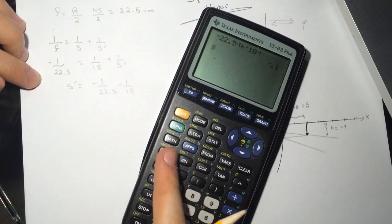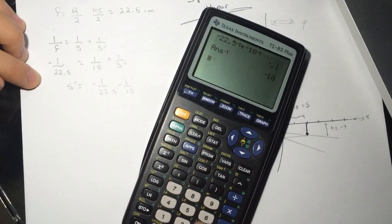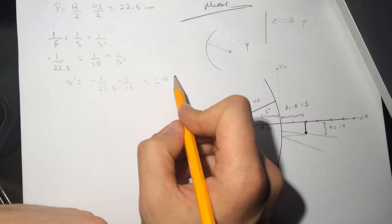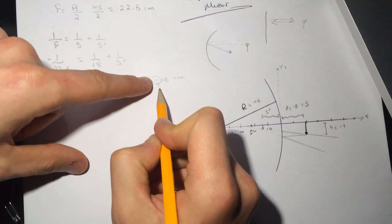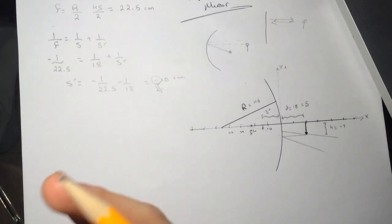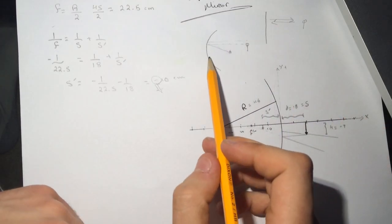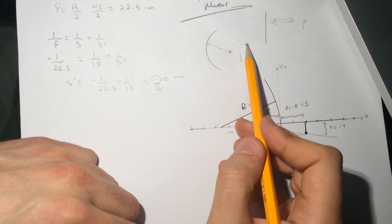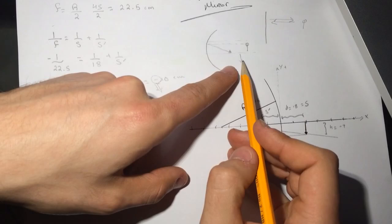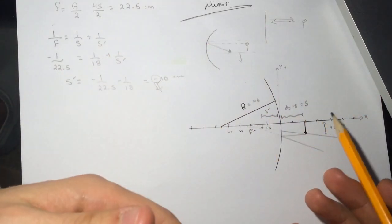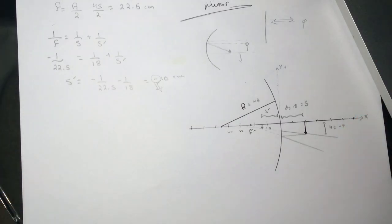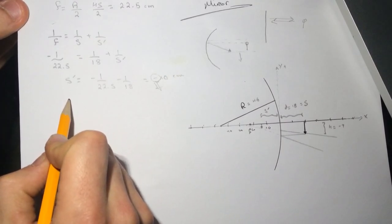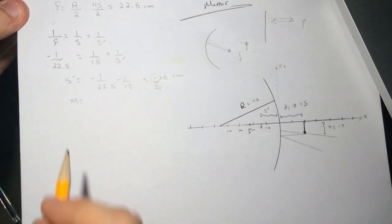So s' = -10 cm. What does this negative sign mean? It means the image is on the opposite side of where it's supposed to be for a mirror. For this convex mirror, the image ends up on the other side — it's a virtual image. The negative sign indicates it's produced opposite to the expected side for a mirror.